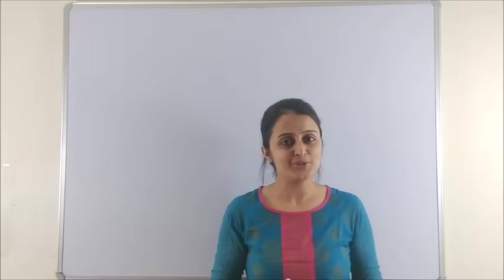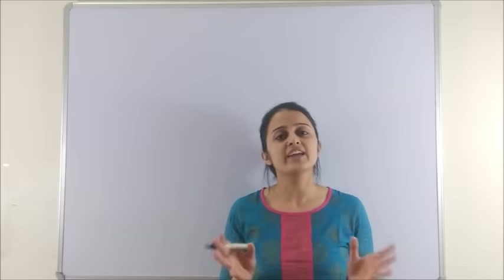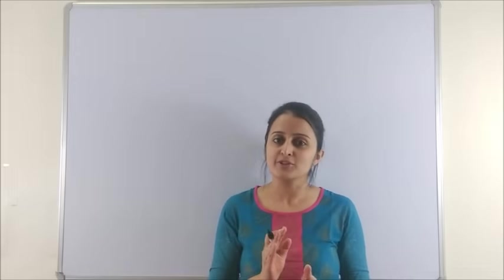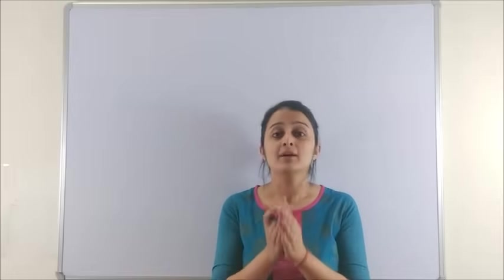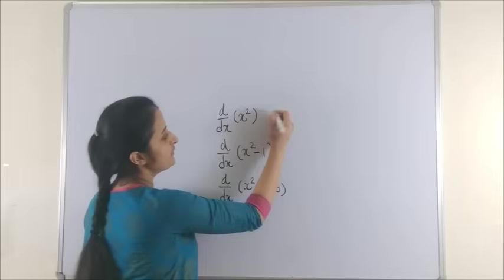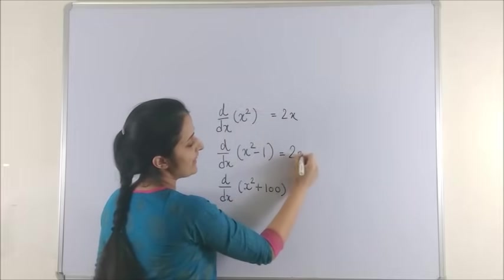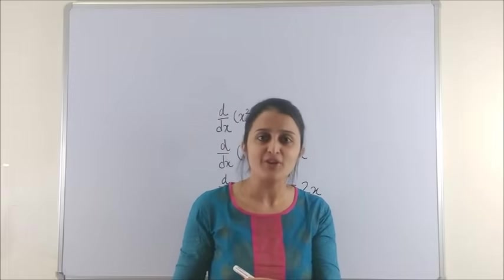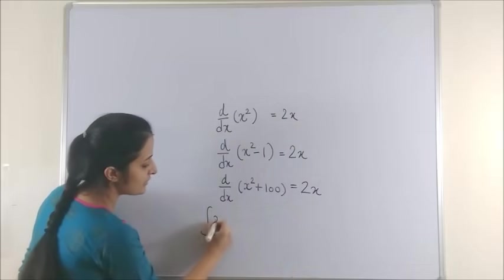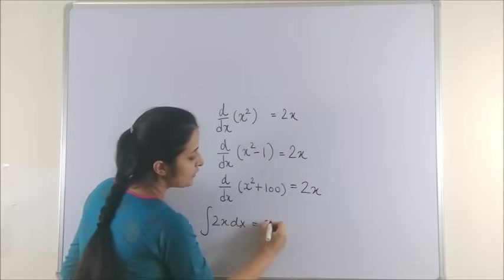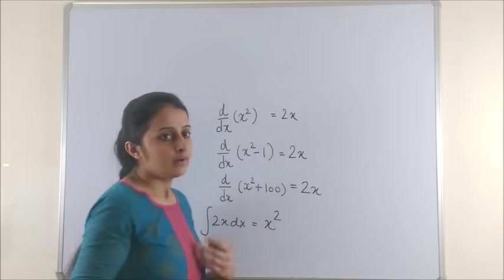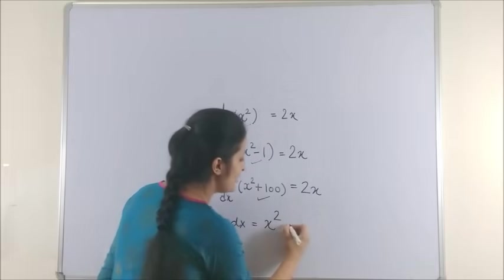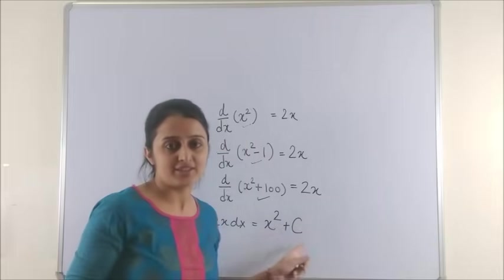Are you also amongst those students who, after doing all the hard work, forget to put the constant of integration for indefinite integrals? This can cost you from half to one mark in your paper. Please realize the significance. Now, if I try differentiating all three examples, I end up getting 2x. We all know integration is just the reverse process of differentiation. So if you integrate 2x dx and end up writing only x square, you never know whether your initial function was this, this, this, or anything else. So you always have to add a constant of integration.